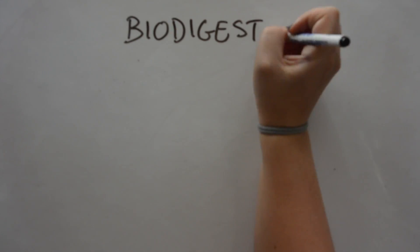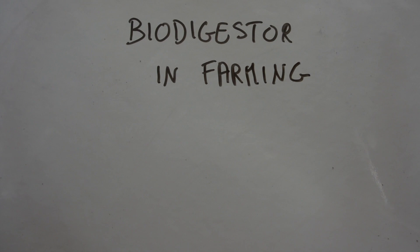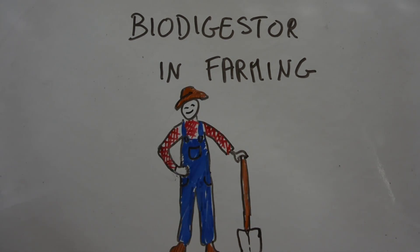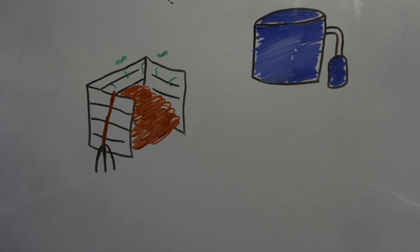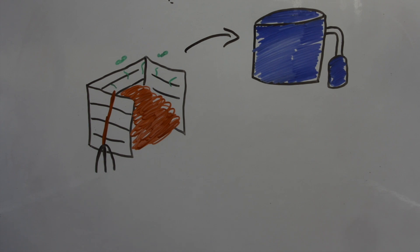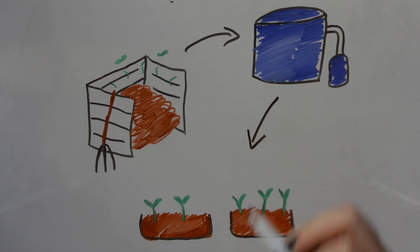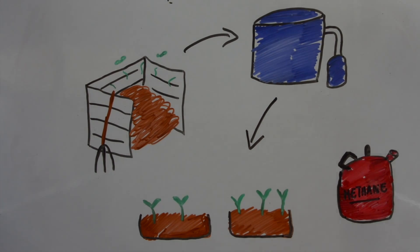The idea is pretty simple. We looked around and found examples in other fields. In the agriculture world, biodigesters can transform organic waste into fertilizer for crops and produce, or methane that can be used as a heating source.